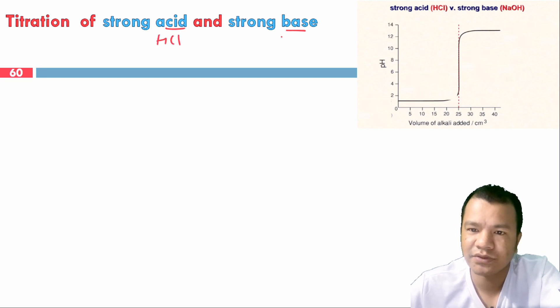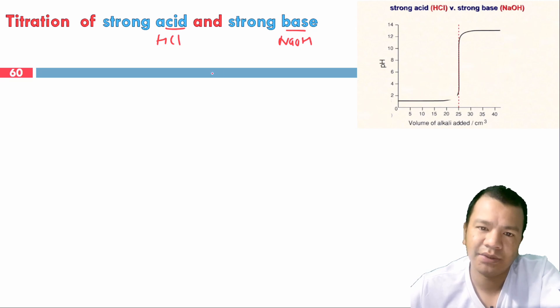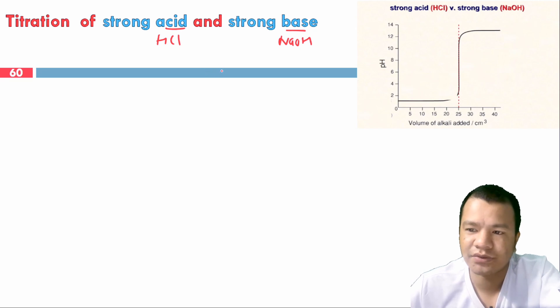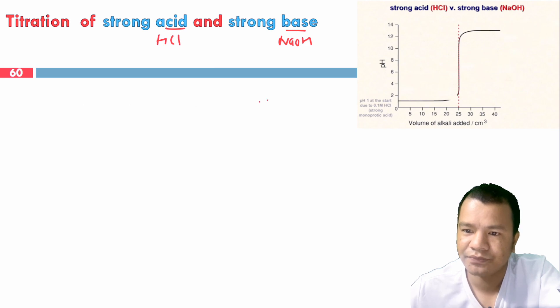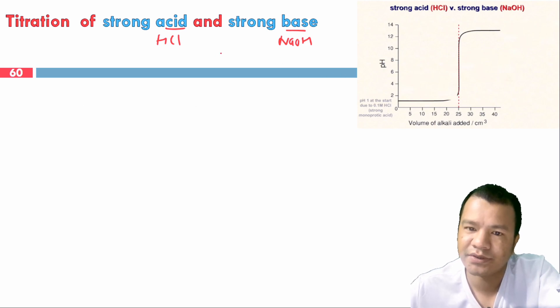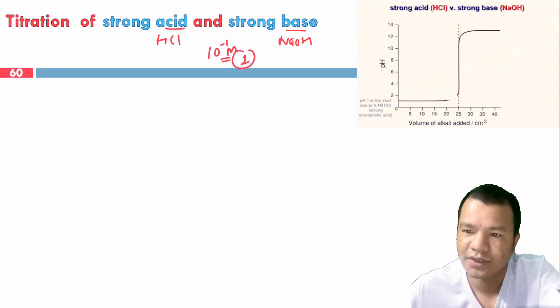Looking at the titration curve, for a strong acid with concentration 10⁻¹ molar, the initial pH is 1. When we add a base, we need to change the pH from the strong acid value. The pH starts constant then rises as base is added.